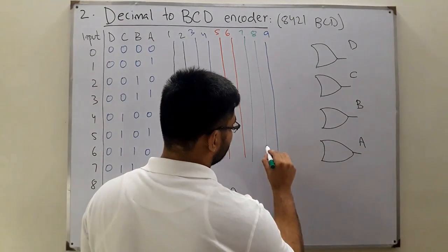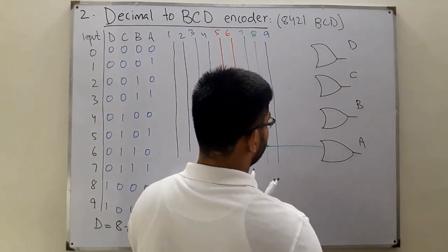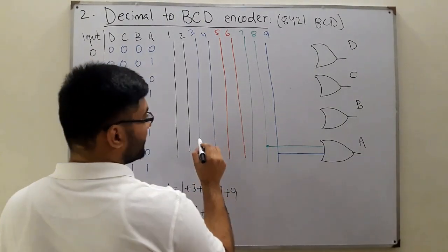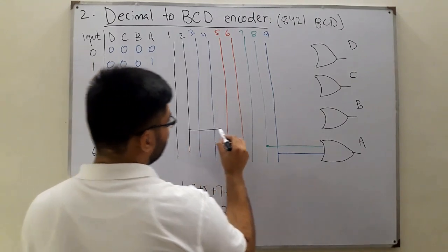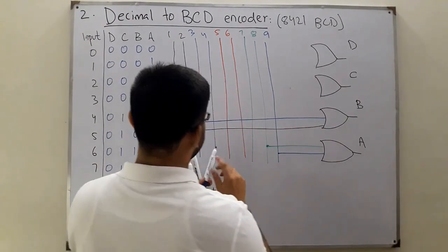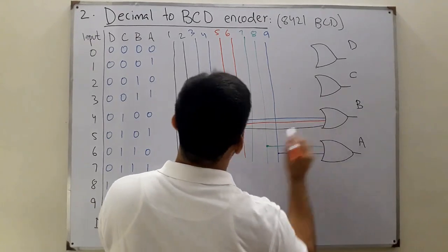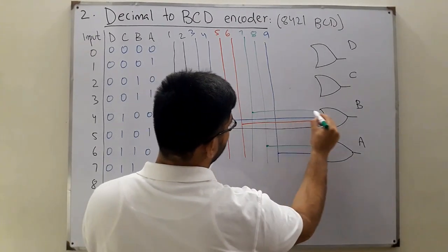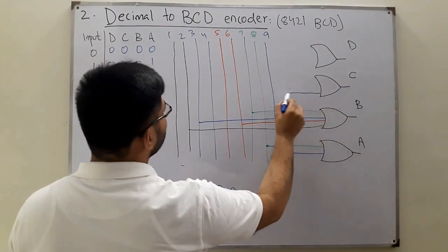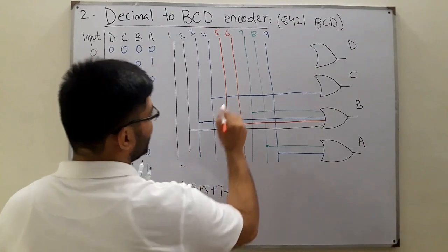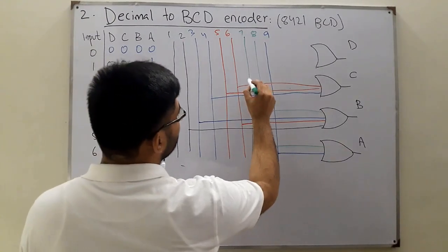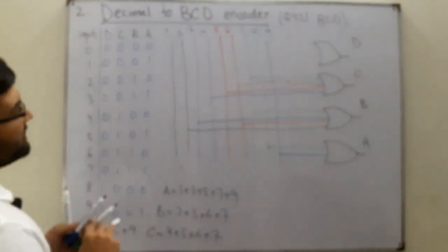D is eight OR nine - eight from the green color and nine from the blue. For B you have two, three, six, and seven - two in black, three in blue, six in red, and seven in green. For C you have four, five, six, and seven - four in blue, five and six in red, and seven in green.